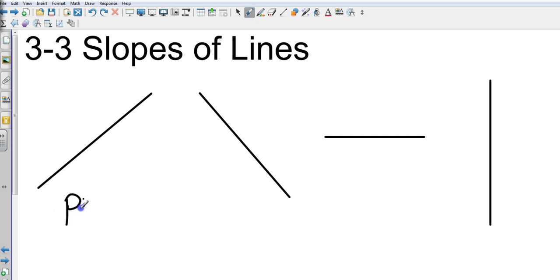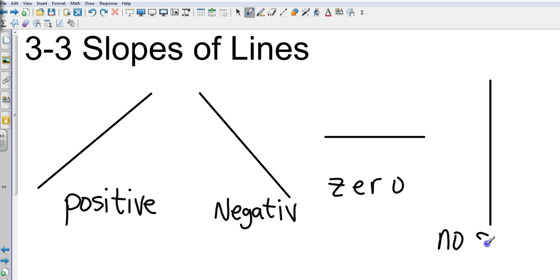And so my relationships are, this one would be a positive slope. This one would be a negative slope. This would have a slope of zero, because it's going straight across. And this one has no slope, or it's undefined. It cannot be measured.